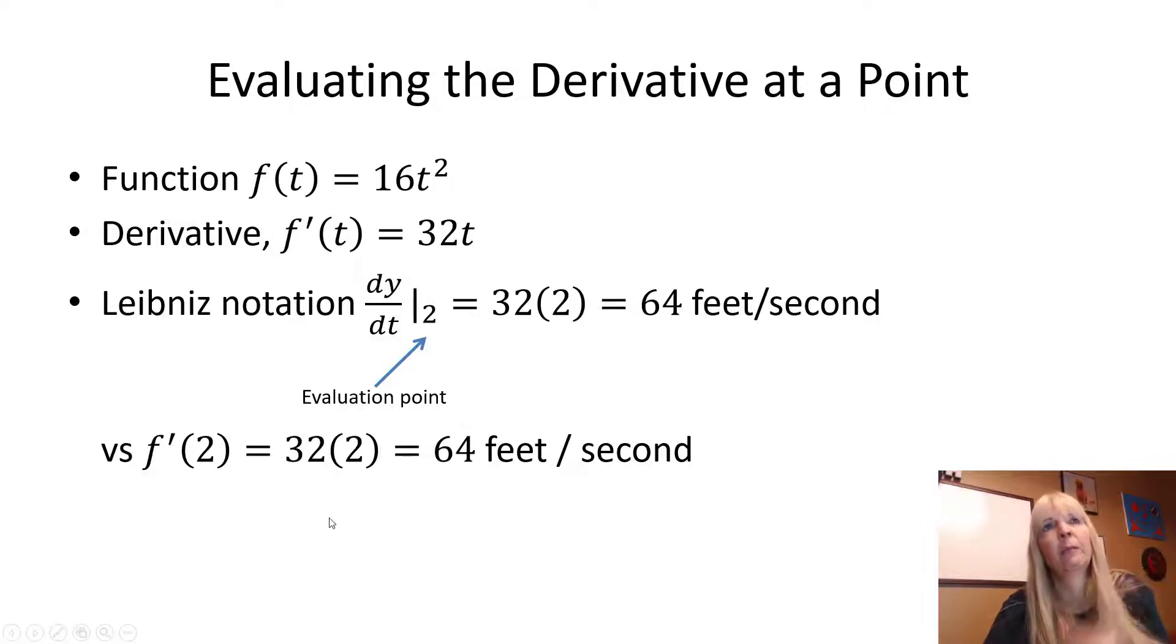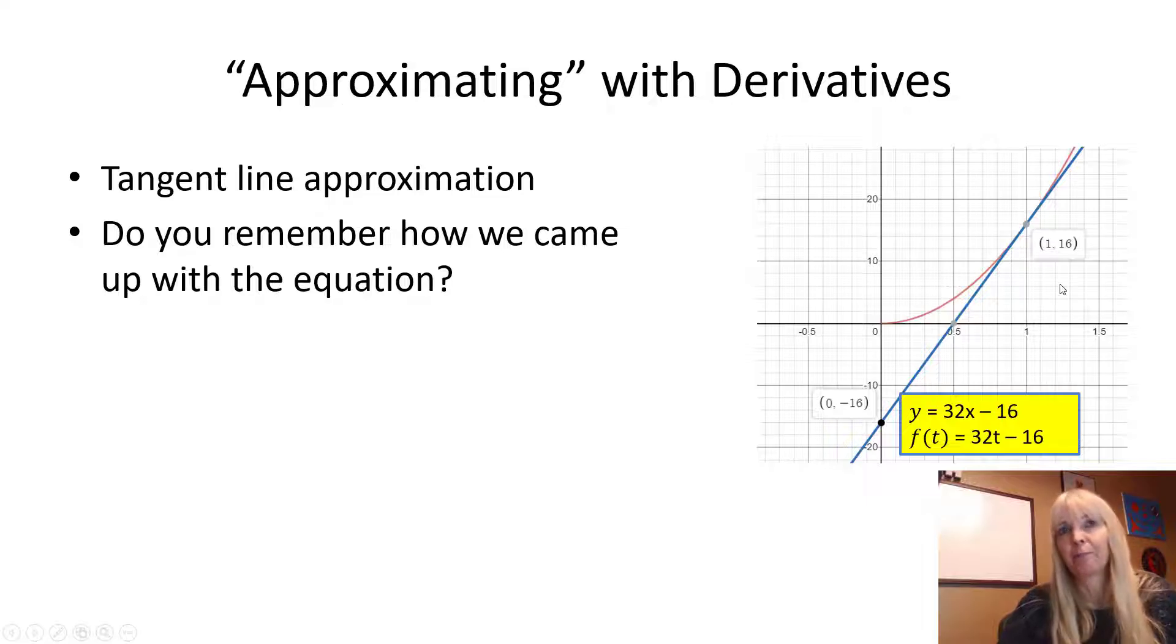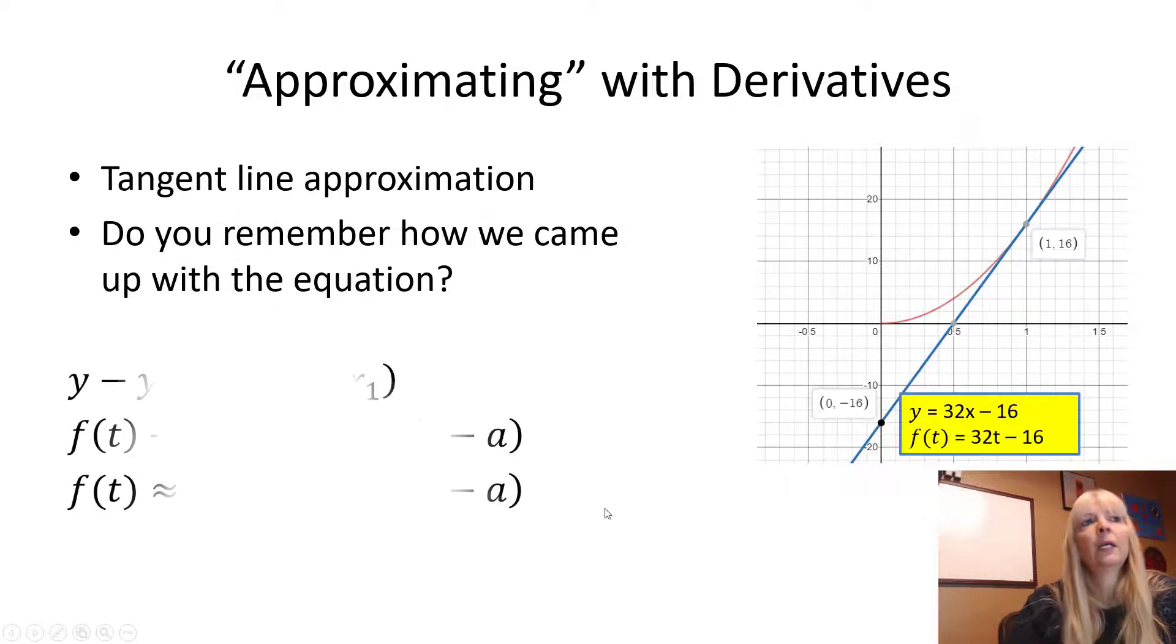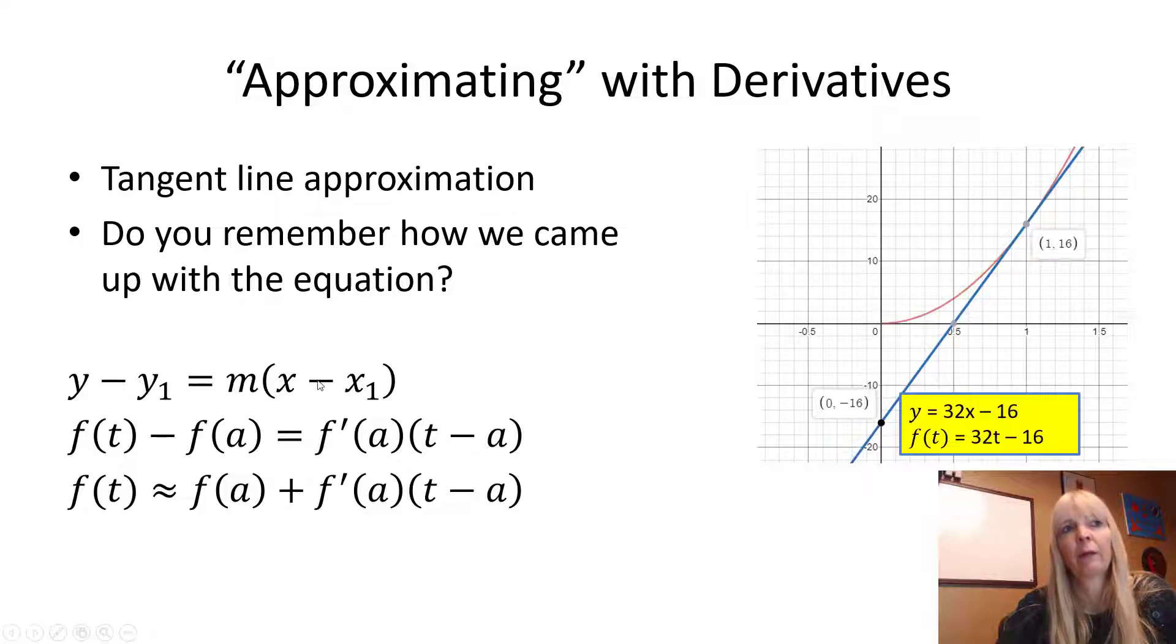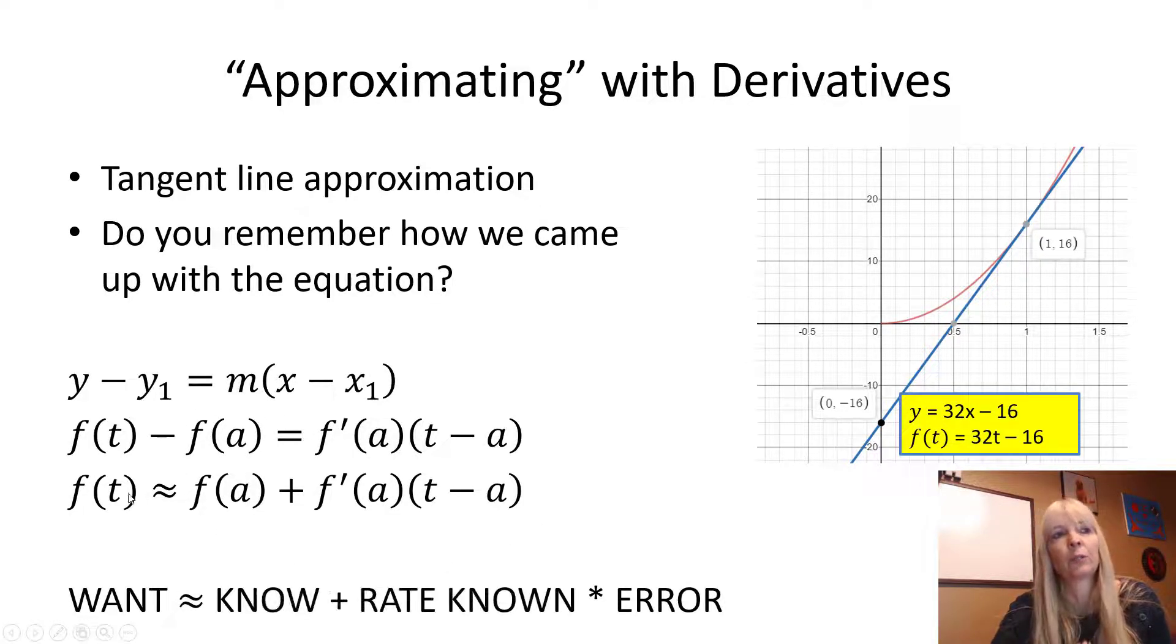Remember when we did our tangent line? Remember what a tangent line was? In other words, at that exact point right there, we came up by using this whole y minus y1 equals m times x minus x1 formula, the point-slope formula, to come up with the 32x minus 16. So we did that a while back. If I rename these things, like so - if I call y my function of t, if I call y1 my particular value that I'm interested in, which we call that a, so then my slope would be the rate at a, and then this would be the gap between the time, so between the time that I'm interested in minus the time that I know. If I chunk this to the other side, you're going to see we call this tangent line approximation.